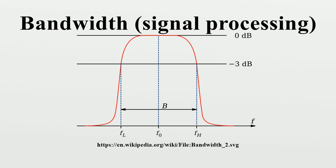In many signal processing contexts, bandwidth is a valuable unlimited resource. For example, an FM radio receiver's tuner spans a limited range of frequencies. A government agency may apportion the regionally available bandwidth to broadcast license holders so that their signals do not mutually interfere.